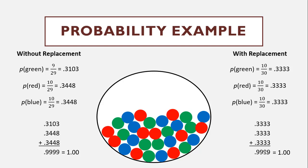Whether sampling with replacement or without replacement, on every possible draw, the odds of all possible outcomes — in this case red, blue, and green — should equate to 1, unless there is some missing data, like marbles that were supposed to be in the bag but aren't. Assuming all data is available and all the marbles are in the bag, the odds of all the outcomes when added together will come out to 1.